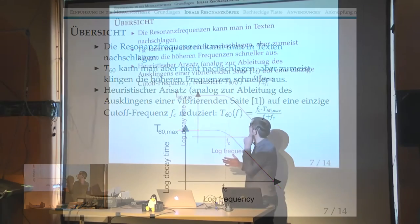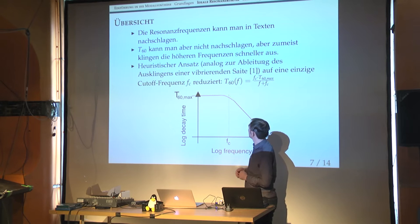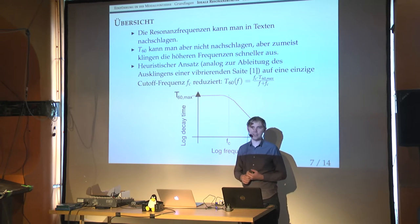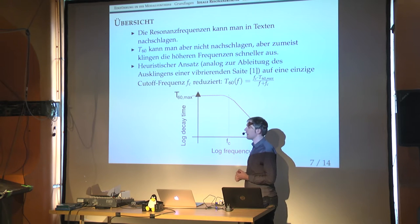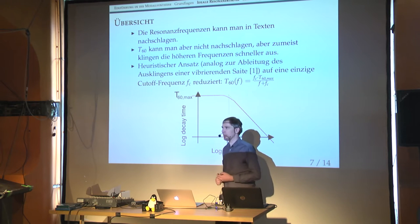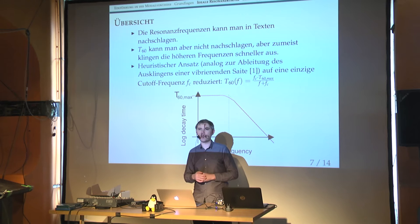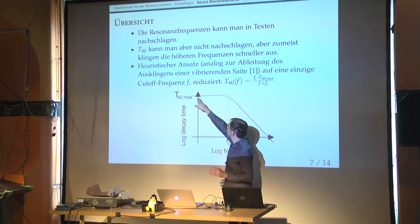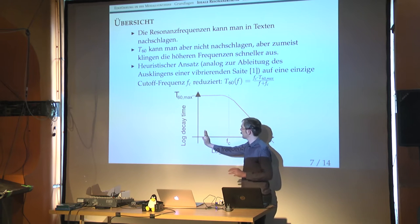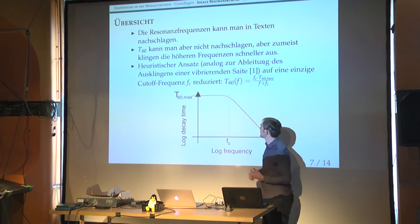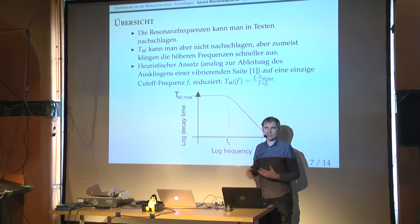What we did was look at the text by Rossing and Fletcher on musical acoustics, which has a section on the decay of partial frequencies in a vibrating string for a classical guitar. They related the different physical mechanisms that could cause the decay. You basically see that some of the T-60s at very low frequencies are constant — the decay times are all the same for really low frequencies — and then there's a cutoff frequency where some other behavior becomes more important.